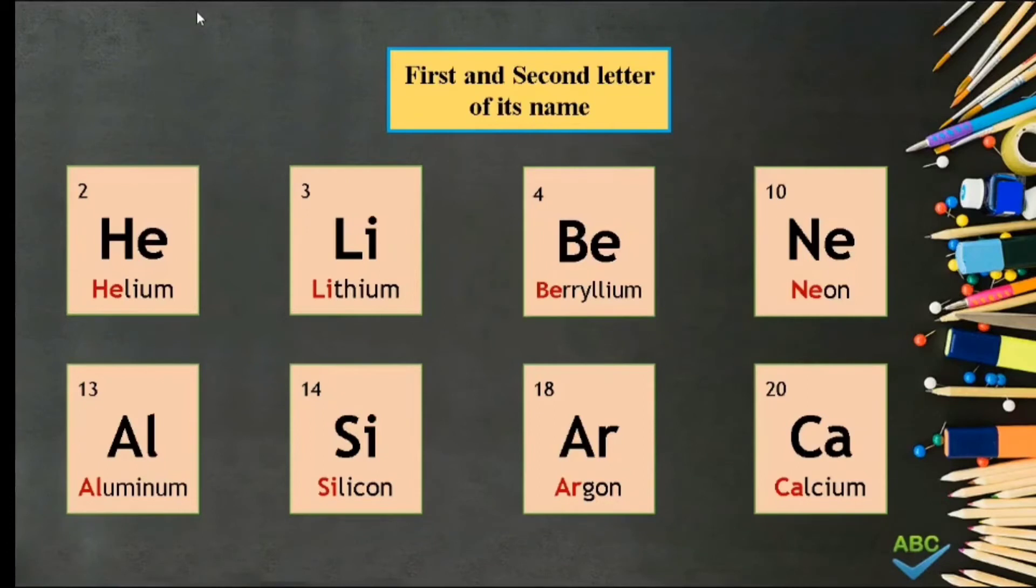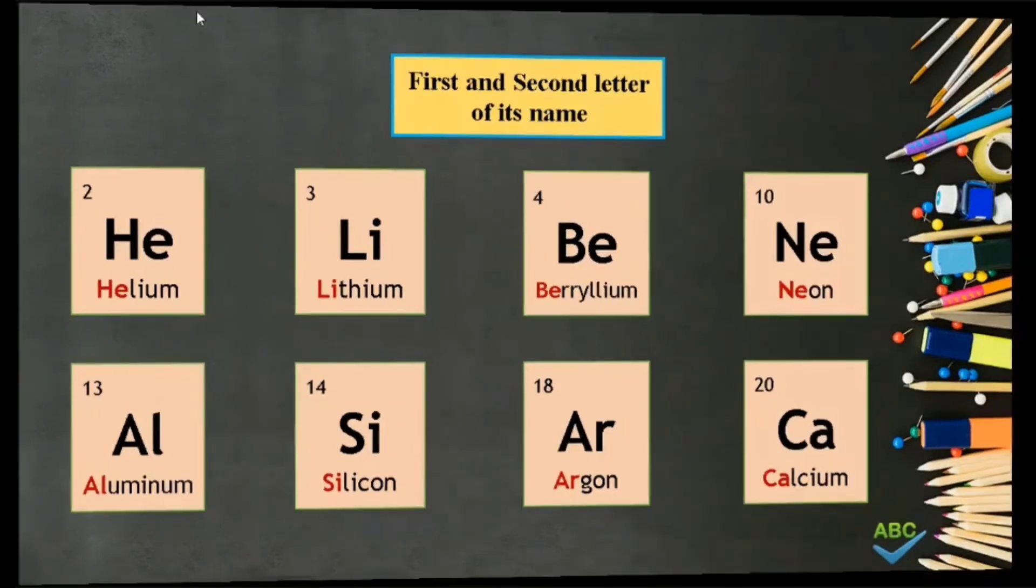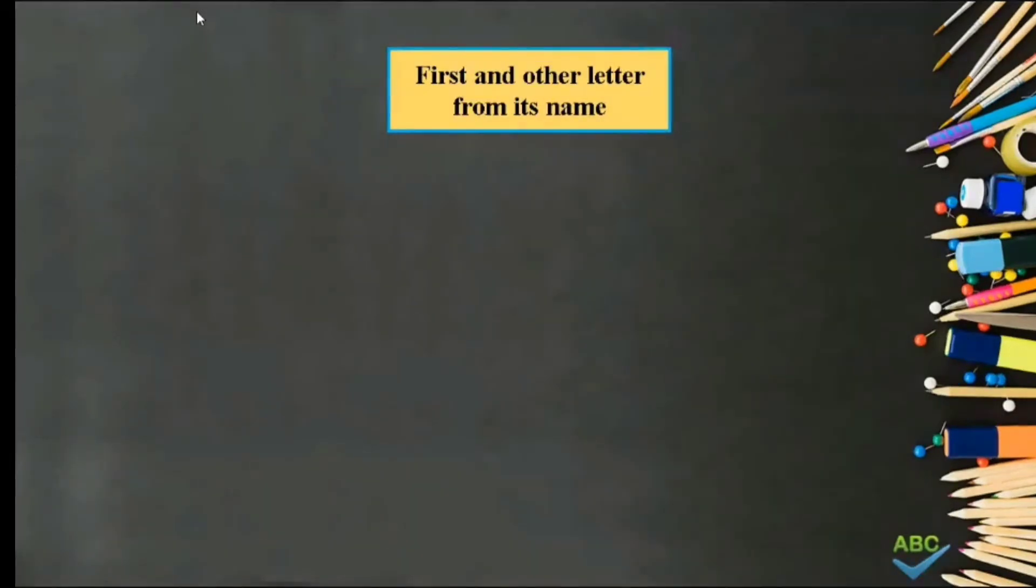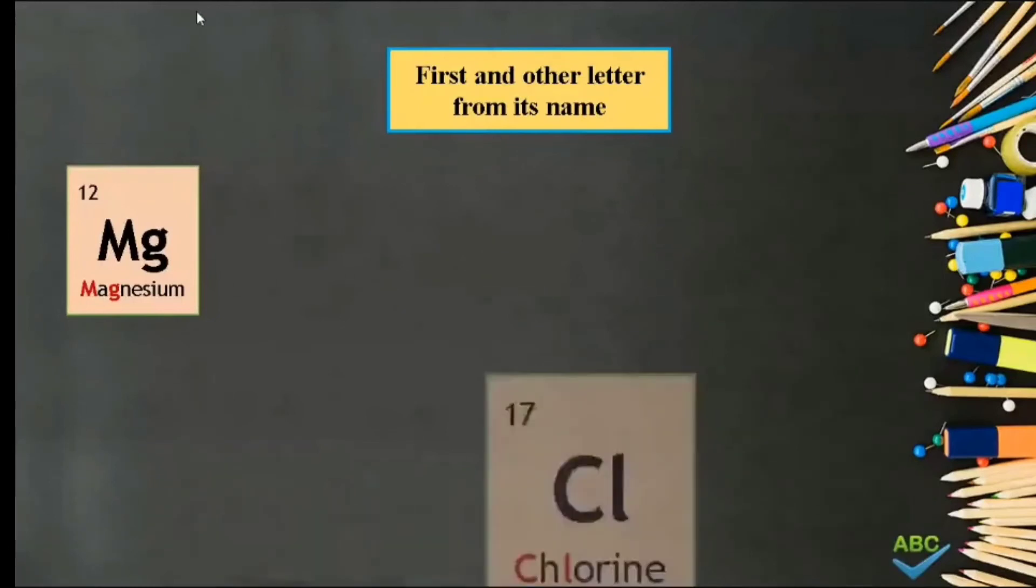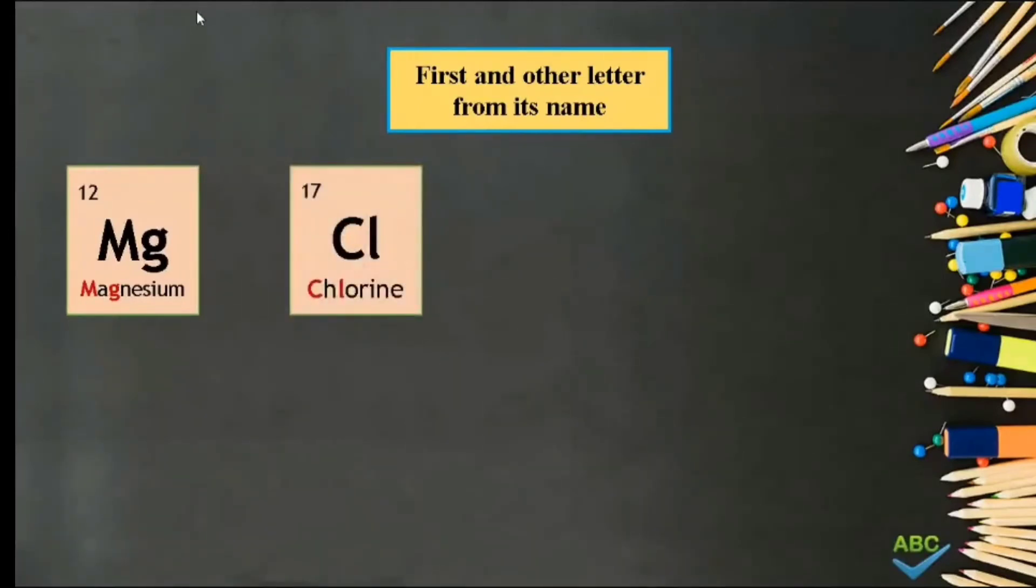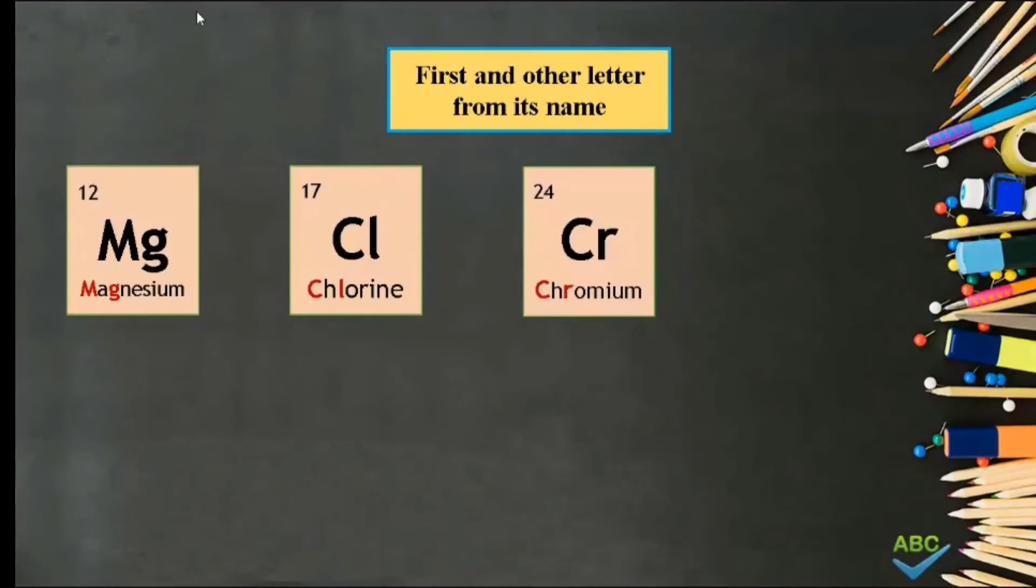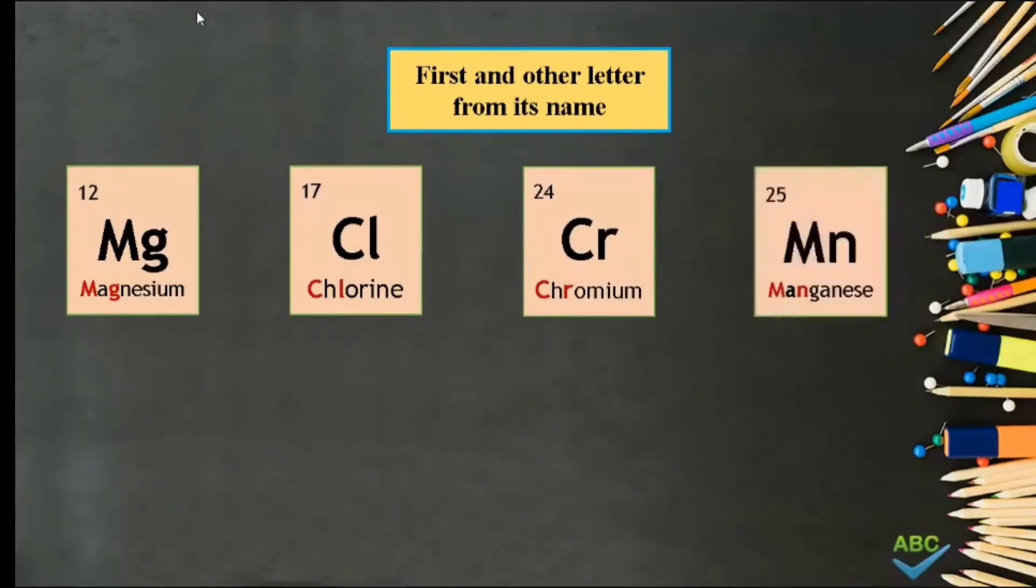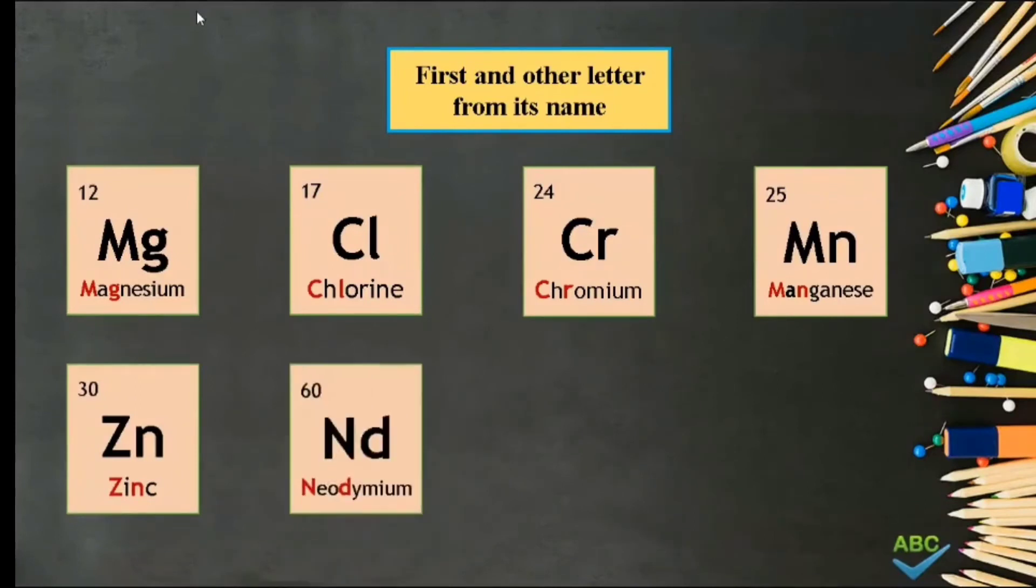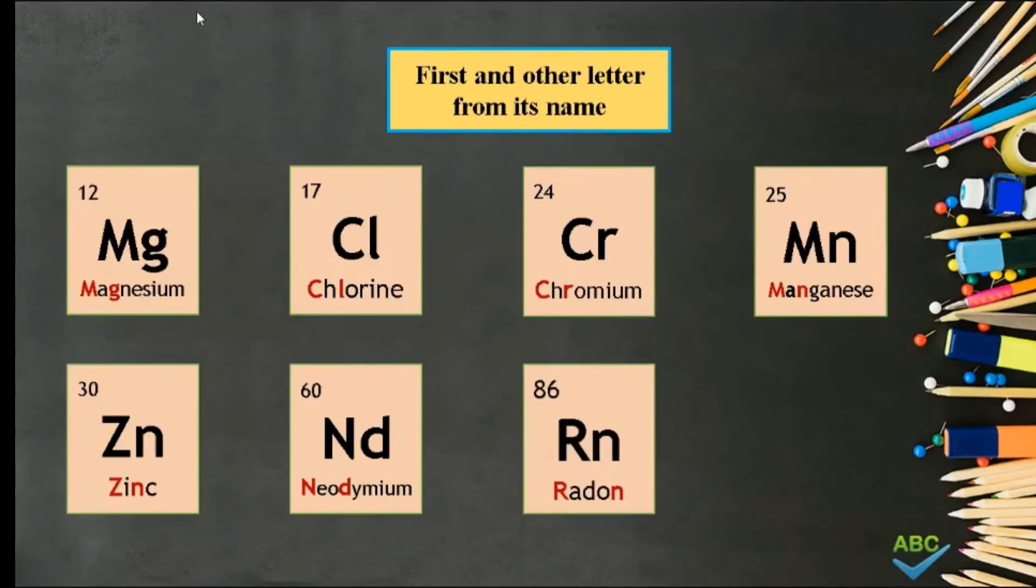Number 3. Based on the first letter and other letter from the elements name. Examples are Magnesium Mg, Chlorine Cl, Chromium Cr, Manganese Mn, Zinc Zn, Neodymium Nd, Argon Ar, and Californium Cf.